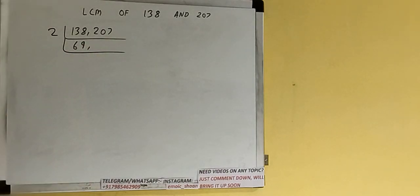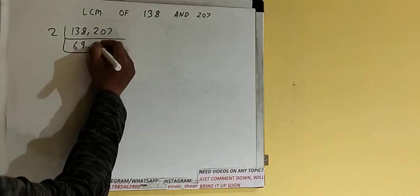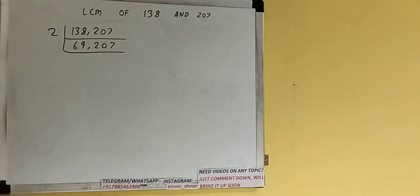The second number 207 is not divisible, so we'll just copy it down. Again, if we check, none of the numbers are divisible by 2, so we'll check with the next lowest prime number, that is 3. Are any of the numbers divisible by 3? If we check, both numbers can be divided by 3.